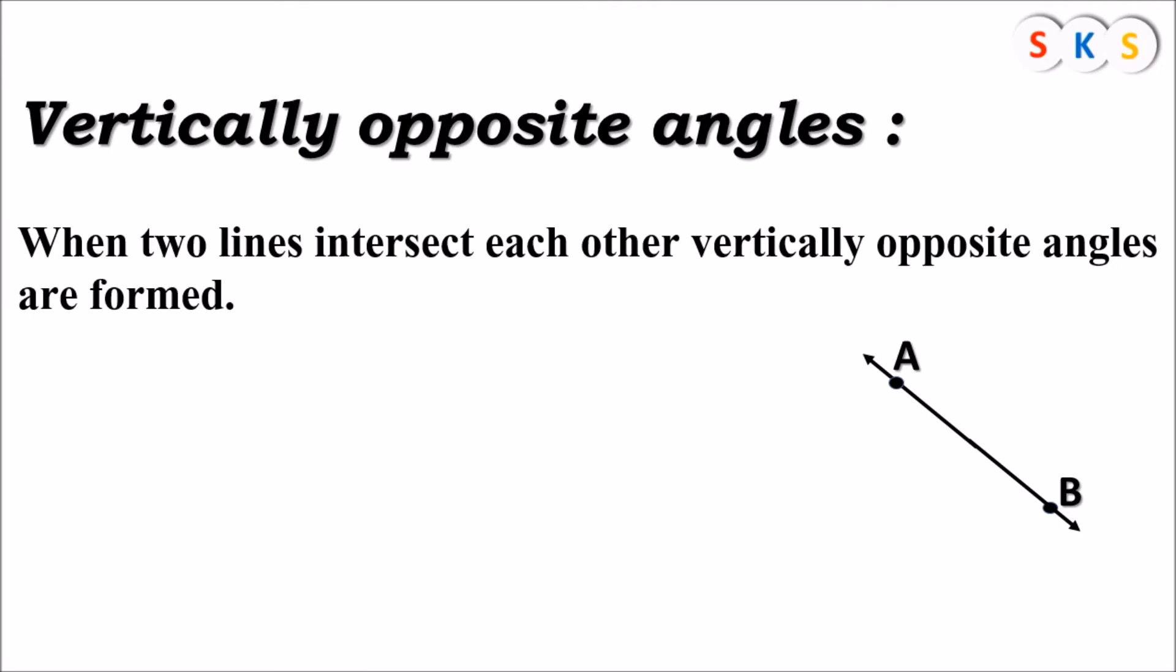Here we have line AB and another line CD. They intersect each other at point O. When two lines intersect each other, four angles are formed. You can see in the figure: angle 1, angle 2, angle 3, and angle 4.